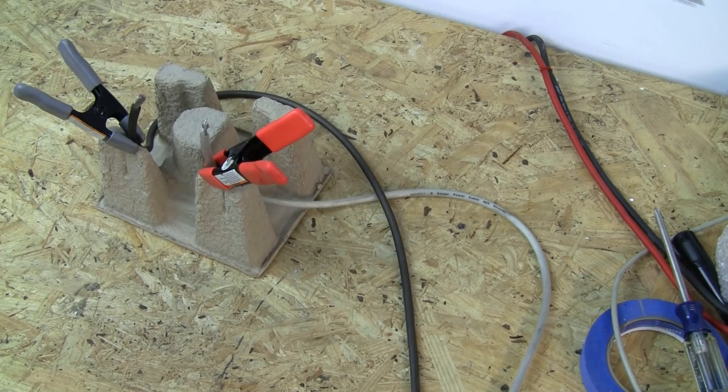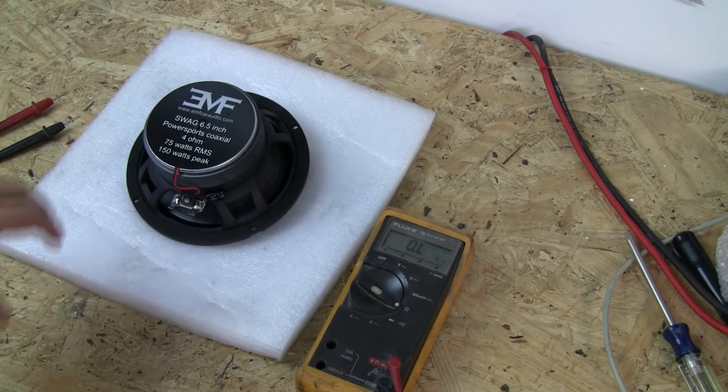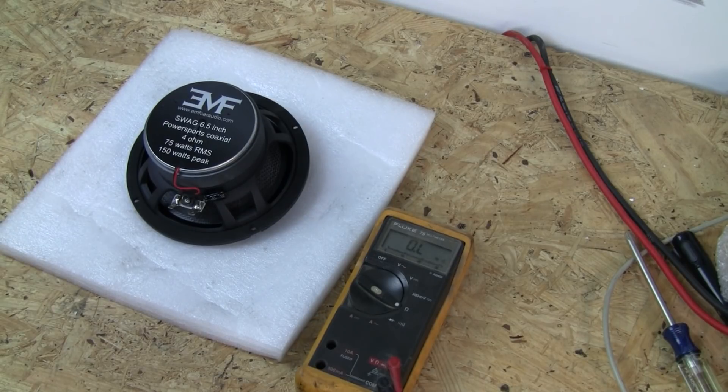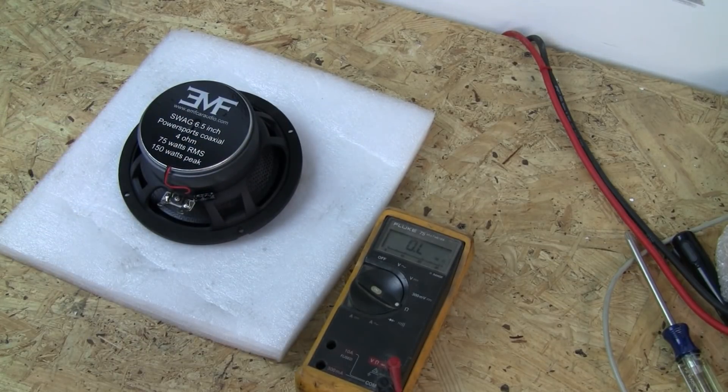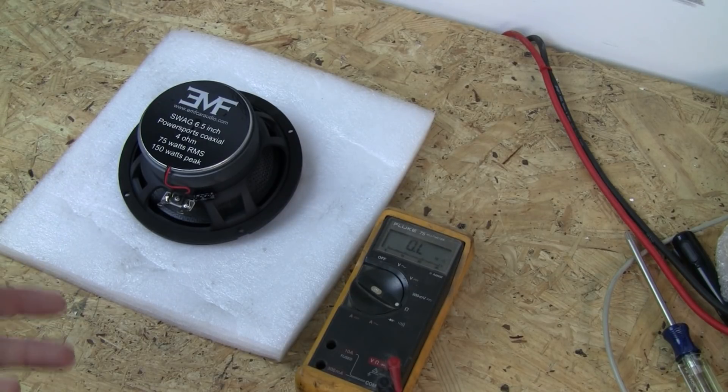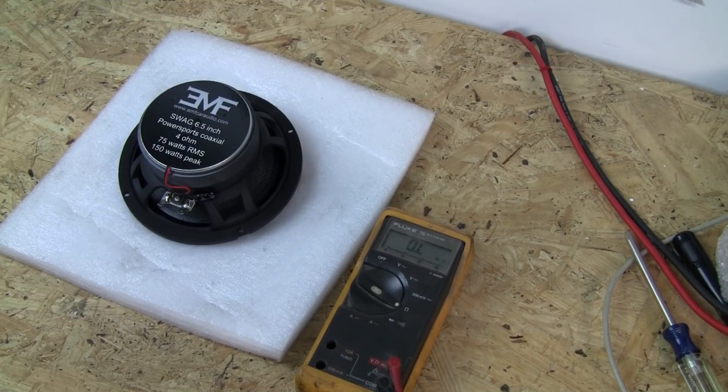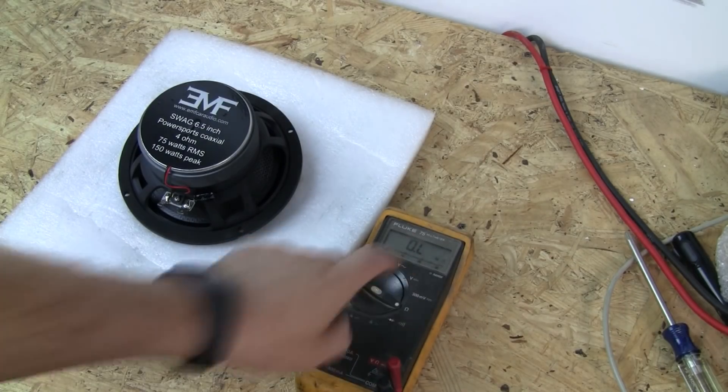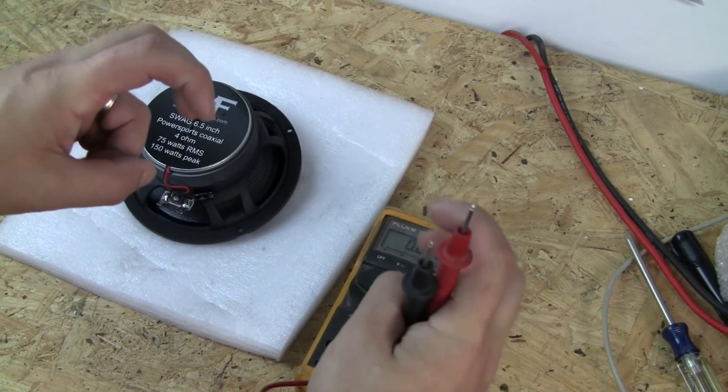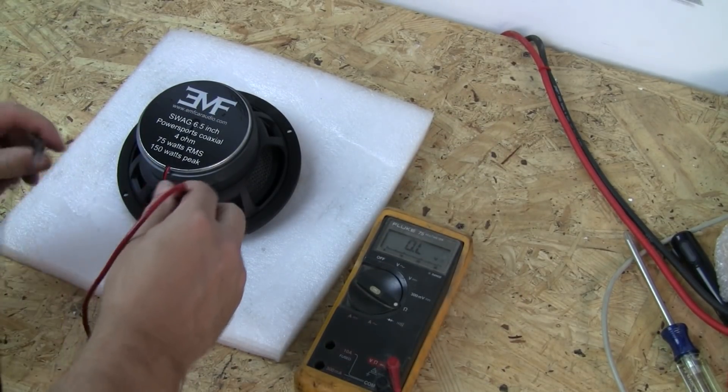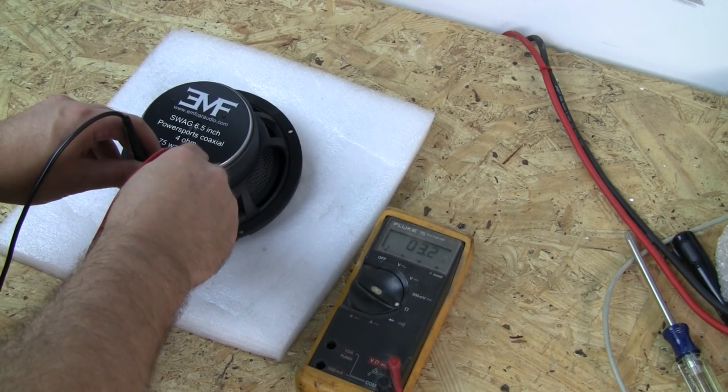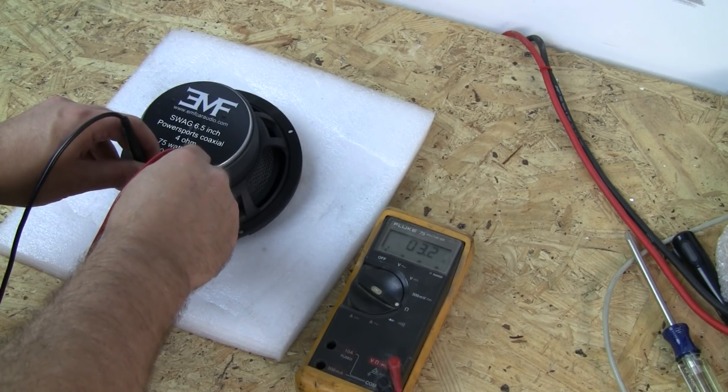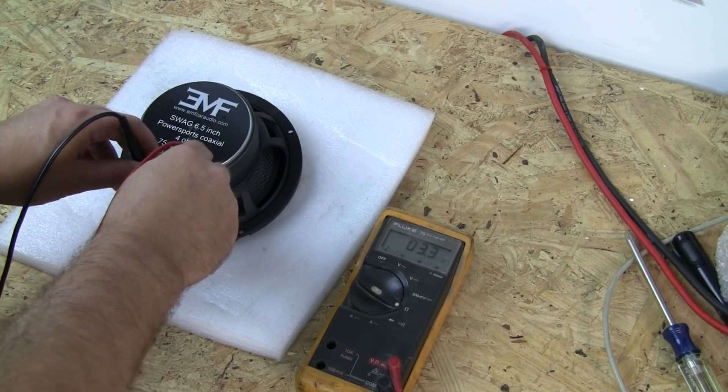Next up we will check impedance. So now looking at impedance I have got one of our four ohm Swag six and a half inch coaxials. Six or four ohm is going to be a nominal number. It should read a little bit different than that. Could be 3.4 all the way up to 4.0 maybe or 4.1. We're gonna first check with the Fluke as that is the standard. And we are reading 3.2, 3.3 ohms on this one.